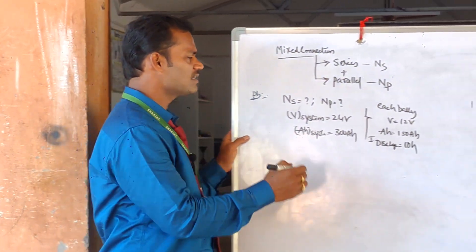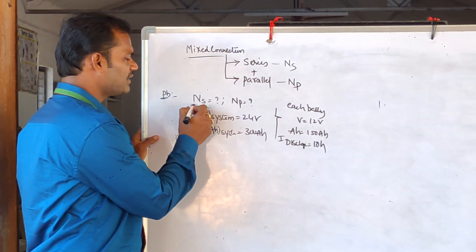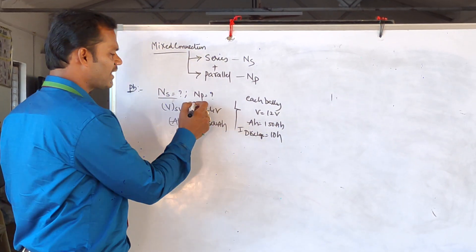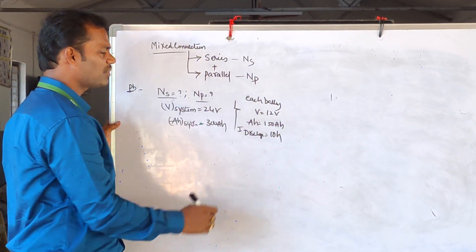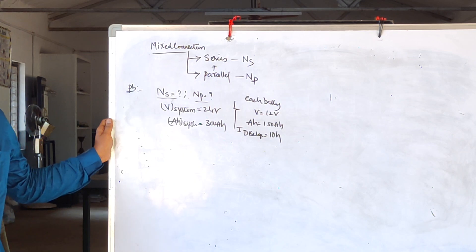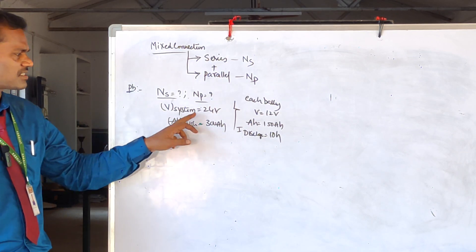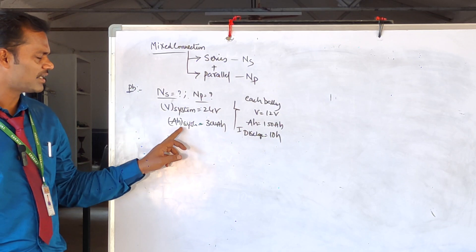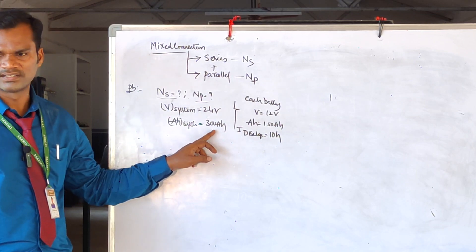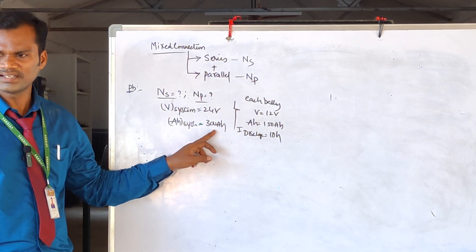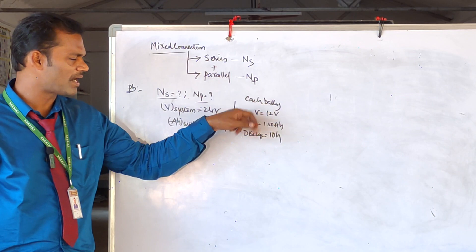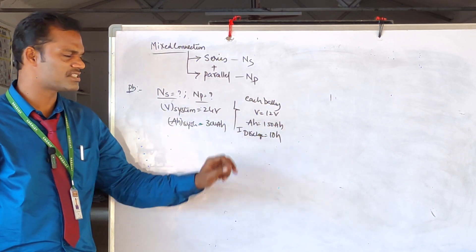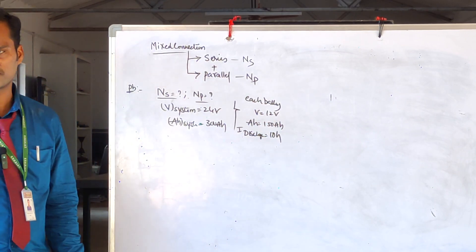The problem asks us to calculate the number of batteries to be connected in series connection and the number of batteries to be connected in parallel connection, to generate a system voltage of 24 volts and a system capacity of 300 ampere-hours. The individual battery parameters are 12 volts, 150 AH, and a discharge time of 10 hours.